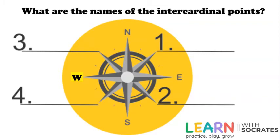What are the names of the intercardinal points? Number one is between north and east, so we'll call that... oh, we won't call it that.